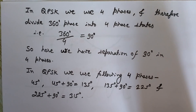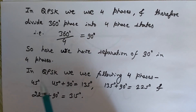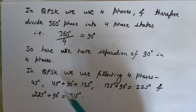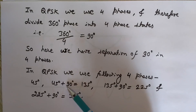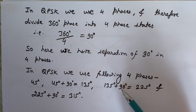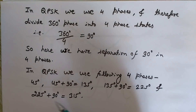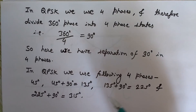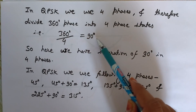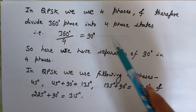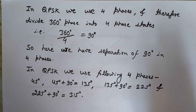In QPSK we use the following four phases. We use 45 degrees, and adding 90 degrees we get 135 degrees, then adding 90 degrees to 135 we get 225, and adding 90 degrees to 225 we get 315. So the four phases are 45 degrees, 135 degrees, 225 degrees, and 315 degrees. All four phases are at a separation of 90 degrees from each other so they can be distinguished easily at the receiving end and can be demodulated without any mixing.